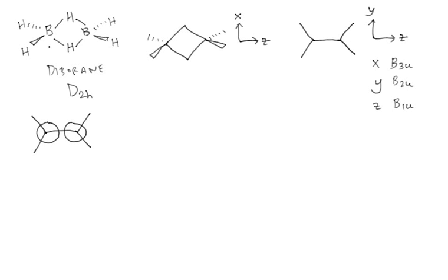Another thing to point out is that when we draw the di-borane molecule, we have eight lines between nuclei. We normally think those lines correspond to two-center, two-electron bonds, but eight lines would mean 16 electrons. We only have 12 valence electrons in this system. That's important to keep in mind because we can only get six electron pairs into molecular orbitals.